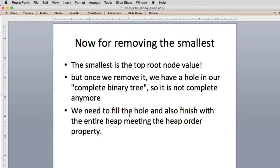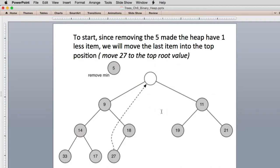So to fill the hole, we have to fill the hole in a way that the whole tree now meets the heap order property again. So here's a picture of what happens. We've removed the five from the heap. So we have this hole.